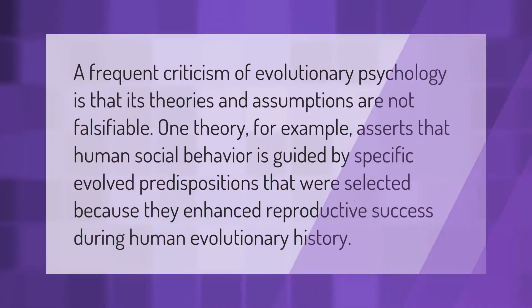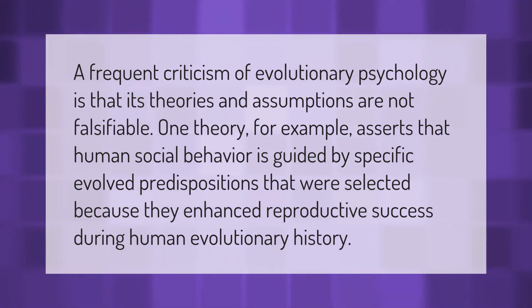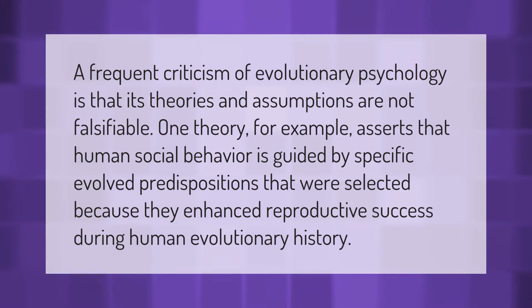A frequent criticism of evolutionary psychology is that its theories and assumptions are not falsifiable. One theory, for example, asserts that human social behavior is guided by specific evolved predispositions that were selected because they enhanced reproductive success during human evolutionary history.